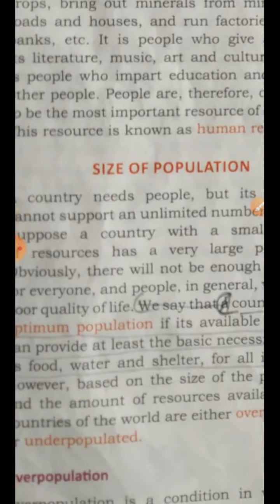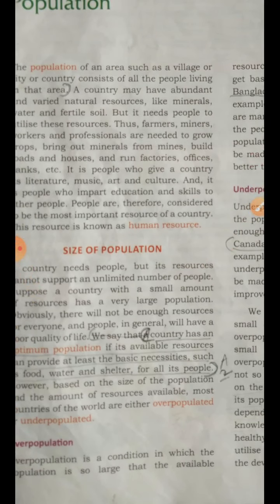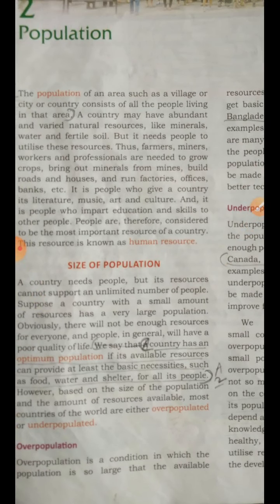What is the size of population? A country needs people, but its resources cannot support an unlimited number of people. Suppose a country with a small population — there will not be enough resources if this population is large. When more people will be there, less resources will be there and people will have a bad quality of life. In such a case, that country cannot be said to have optimum population, and that country which cannot meet the needs of the people living in it is known as an overpopulated country.